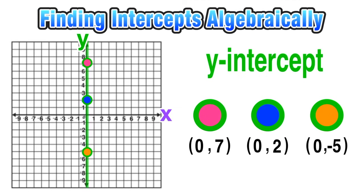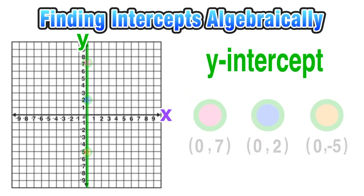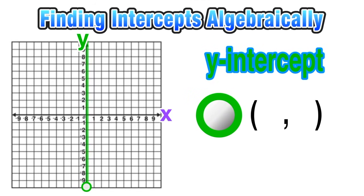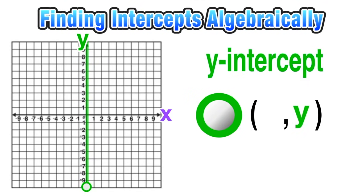In this case, notice that all of the x-coordinates are equal to zero for any y-intercept, and again this is true for any point on the y-axis. Since it does not move left or right, the x-coordinate is always zero, and it is the y-coordinate that will be different.